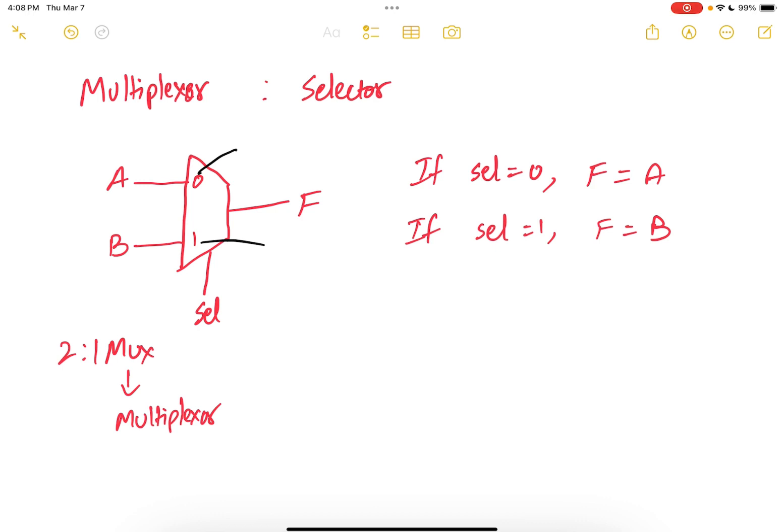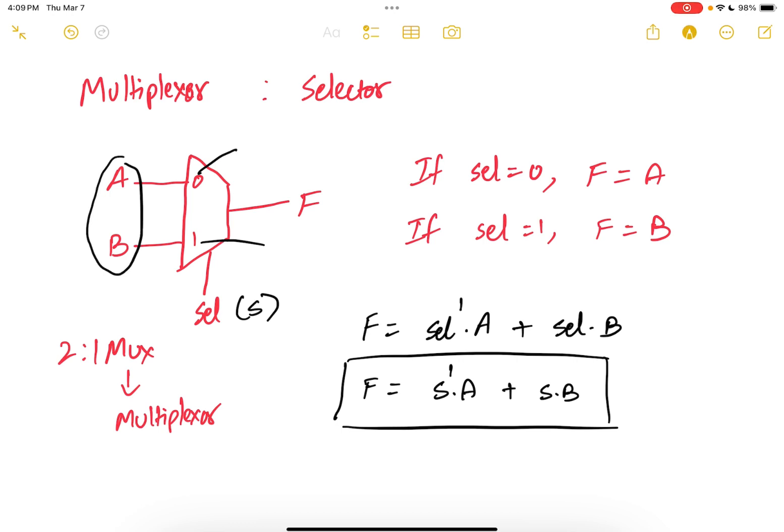And you can write the logic expression for F. So F is equals SELECT prime A or SELECT and B. So instead of SELECT, I can just write S. So F is equals S prime A or S and B. So that is the multiplexer. The reason it is called a 2 to 1 multiplexer is because you have two inputs and one output. So only one output is allowed to pass through the output.